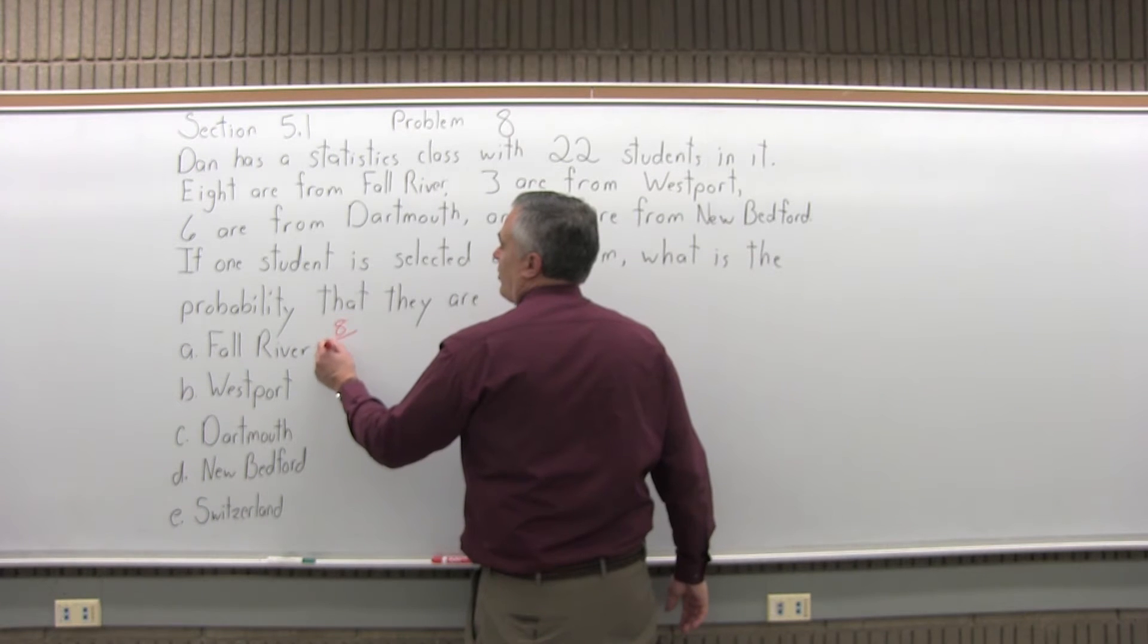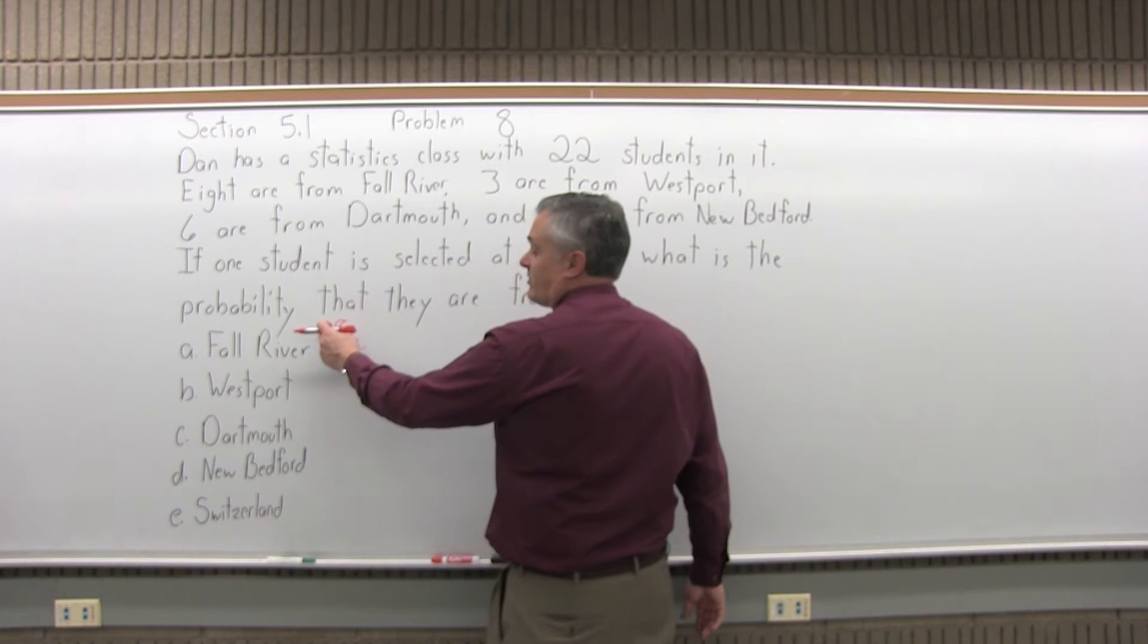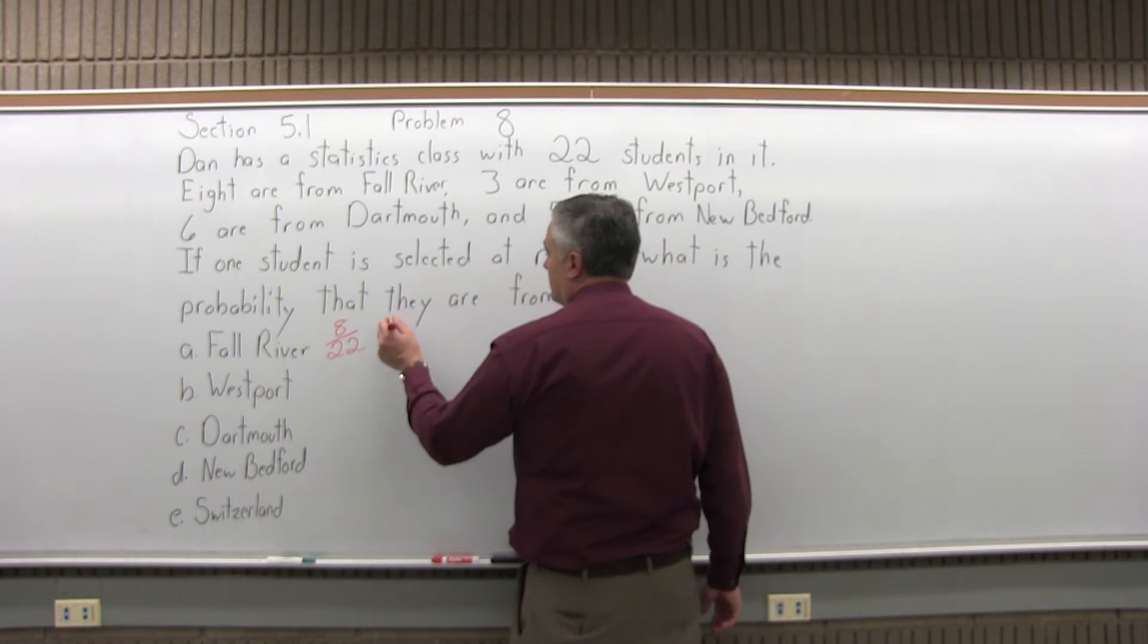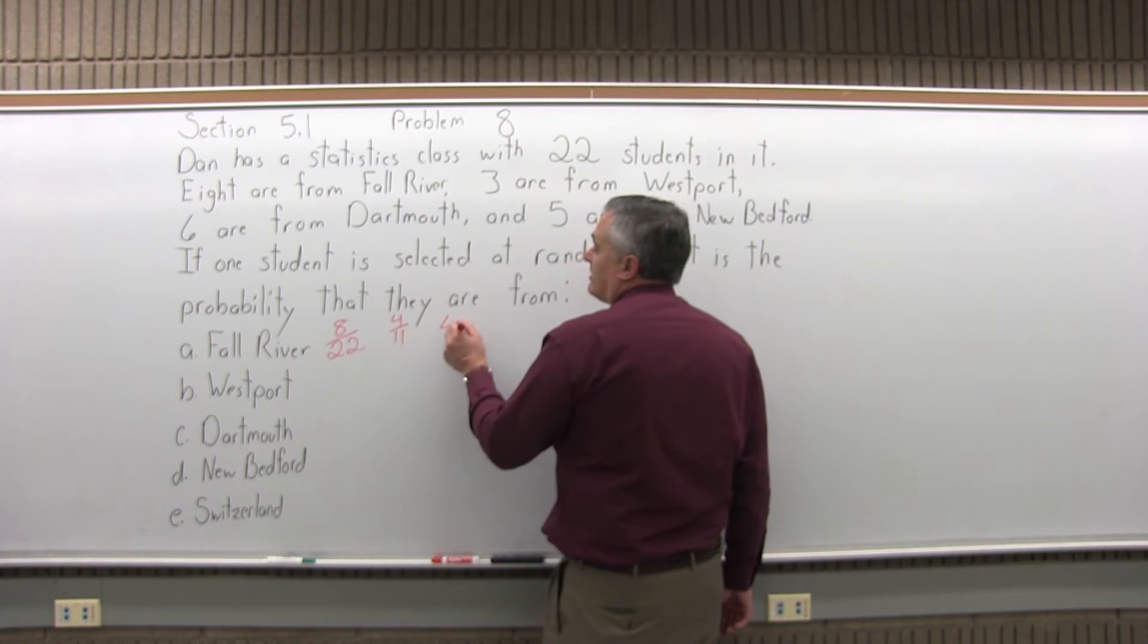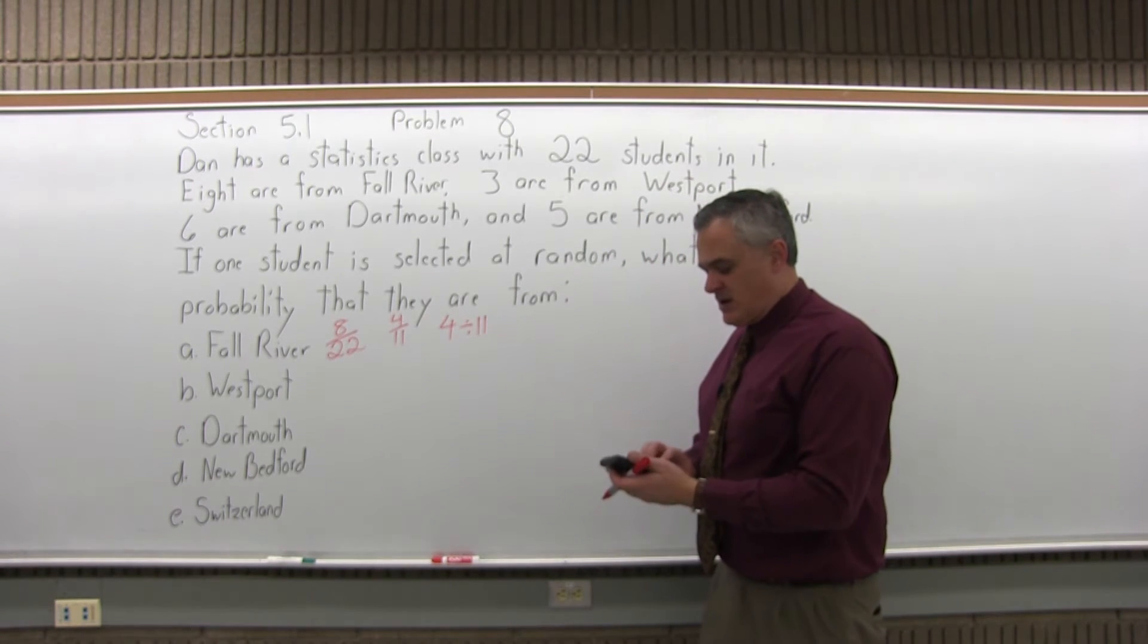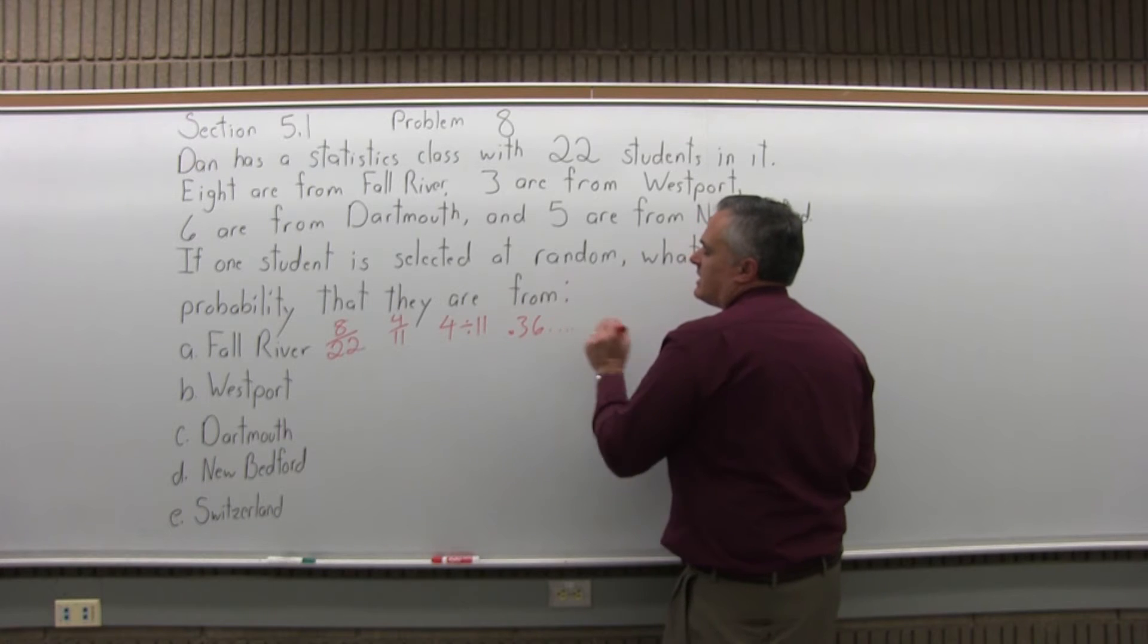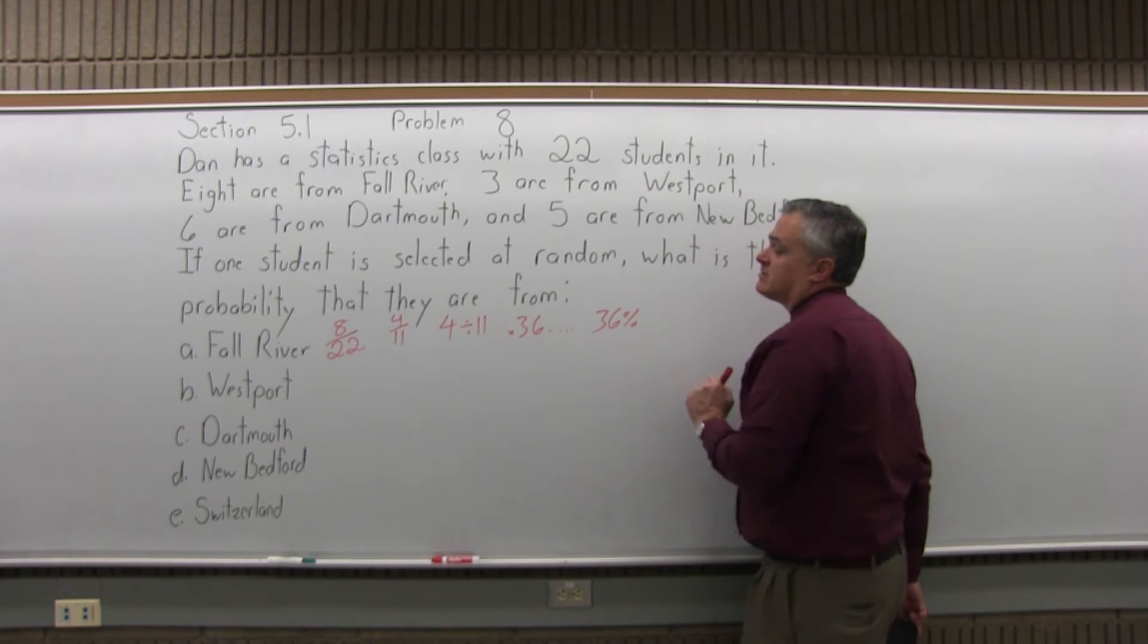So what's the probability that one randomly selected student would be from Fall River? It's 8 over 22 because there are 8 from Fall River out of 22 in the class altogether. Eight over 22 is a perfectly good answer. If you like, you can reduce it. Half of 8 is 4 and half of 22 is 11. If you like, you can make it into a decimal or a percent. You don't have to, this is optional. Four divided by 11 gives you a decimal of .363636, it repeats forever, 36-36. Or if you like percents, that would be 36%.